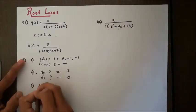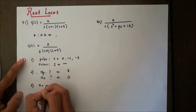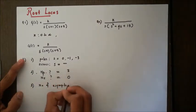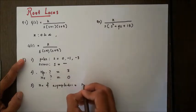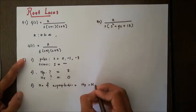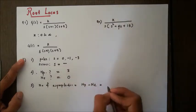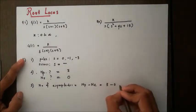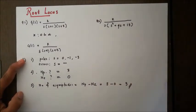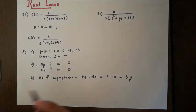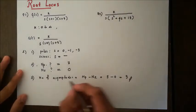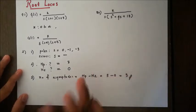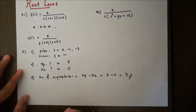The third step is to find the number of asymptotes. The number of asymptotes equals Np minus Nz — the number of poles minus the number of zeros — which here is 3 minus 0, giving us 3 asymptotes. These asymptotes are lines we plot on the graph with reference to which we draw our root locus.